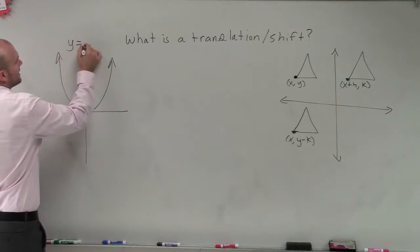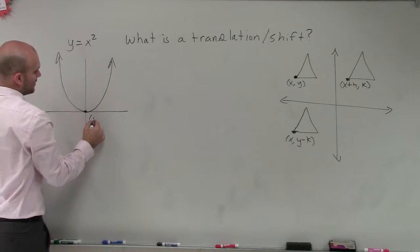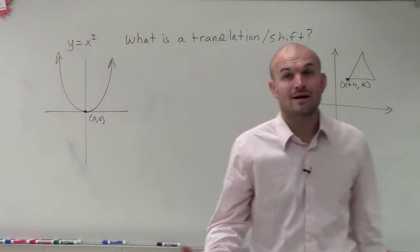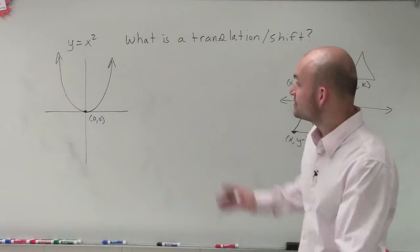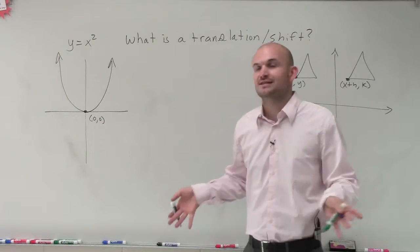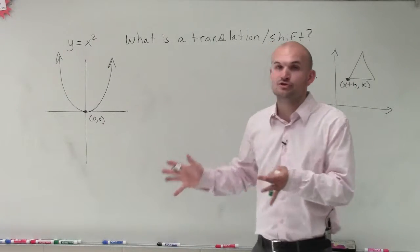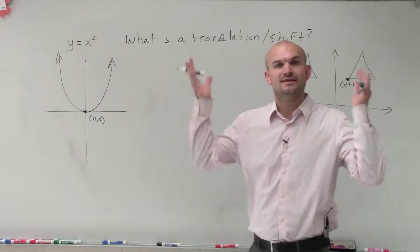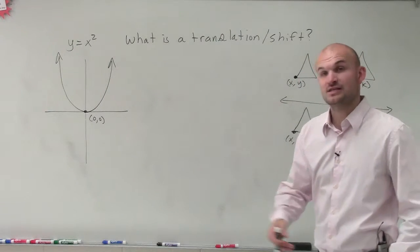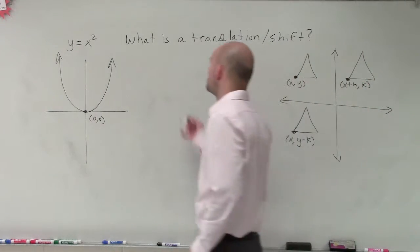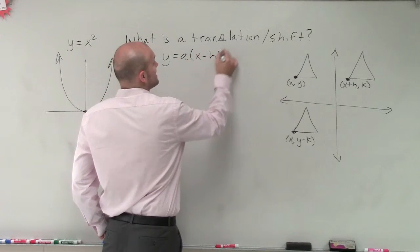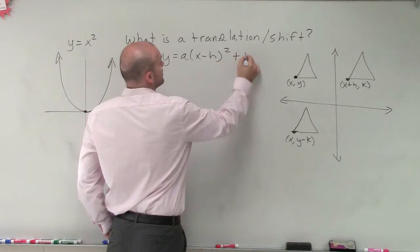So this is y equals x squared. An important point of our quadratic is our vertex, which in this case is at (0, 0). As long as I can find the vertex, I can transform it and simply plot it. When we're talking about transformations, the easiest way is to make sure the equation is in vertex form, which is y equals a times x minus h squared plus k.